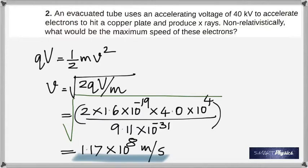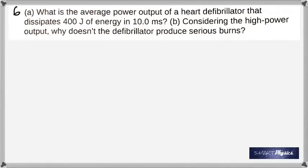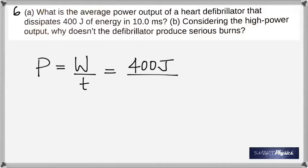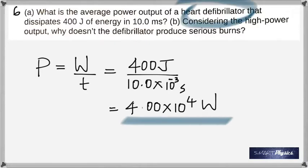In this question, what is the average power output - important word here is power - of a heart defibrillator that dissipates 400 joules of energy in 10 milliseconds? Power is work over time, and what is given as energy is simply work. Divide that and you get 4 times 10 to the power 4 watts.